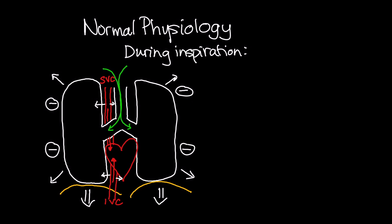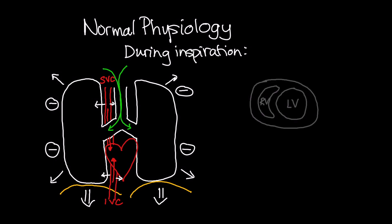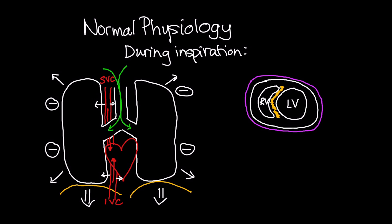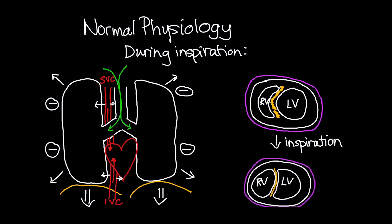To understand this interaction, we will illustrate the heart as a cross-section in the parasternal short axis view. Here you can see the left ventricle and the right ventricle are separated by the interventricular septum, highlighted in yellow. You can also see the pericardium surrounding the heart in pink. During inspiration, there is increased venous return to the right side of the heart. As the right ventricle fills, the free wall will expand outward and, when limited by the pericardium, push against the interventricular septum. If the septum bows into the left ventricle, this can impair LV filling and result in a reduced left ventricular end diastolic volume. This interaction is called intraventricular dependence.